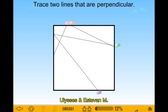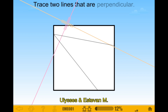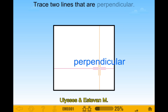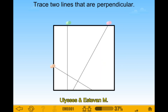Trace two lines that are perpendicular. Gotta find two lines that are perpendicular. Which two lines are perpendicular? Oh, I see — here, and then right here. Trace two lines that are perpendicular. That's simple. Wait, before it was harder. Now it's simpler.